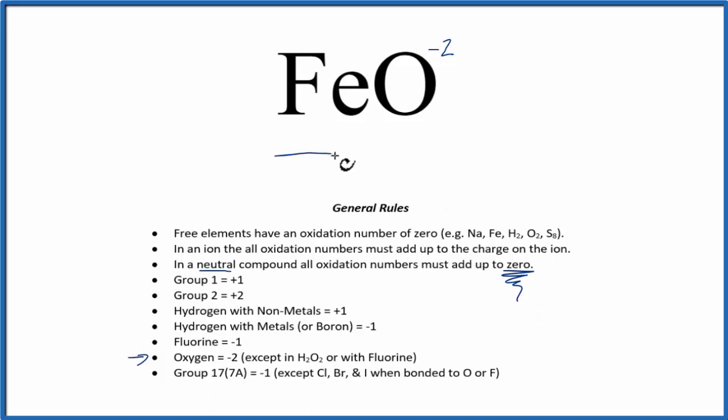So we know whatever iron is, plus this minus 2 for the oxygen, has to equal zero. So if we had a plus 2 here, plus 2 and minus 2, that equals zero.